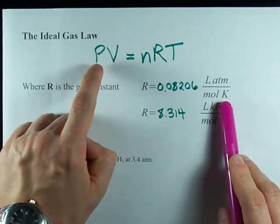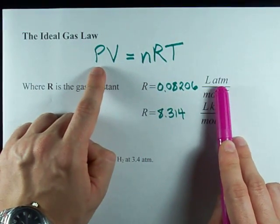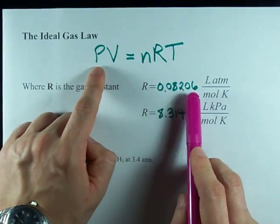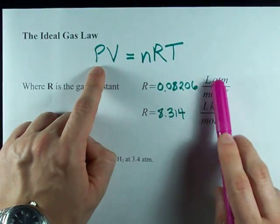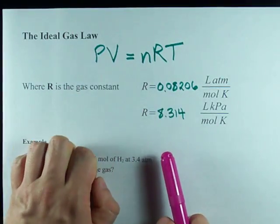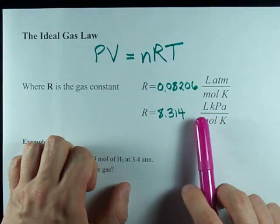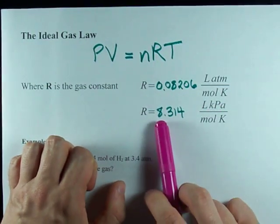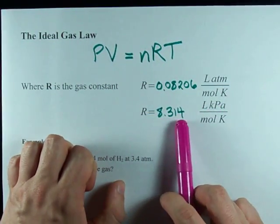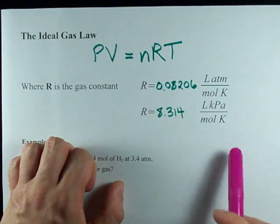But if you prefer to use atmospheres for pressure, then you're going to want to use 0.08206 for your R, that way the units will cancel out. If you prefer to use kilopascals for pressure, the number I want you to use is 8.314, that way your units will cancel out.